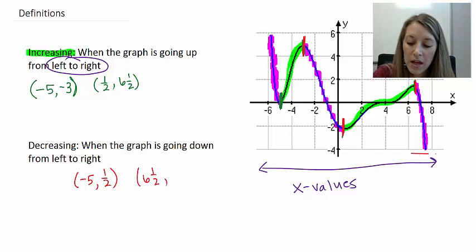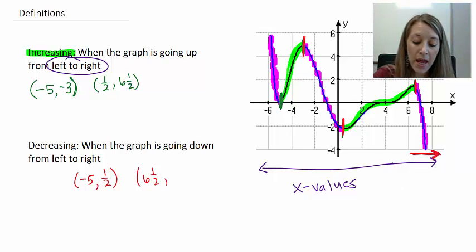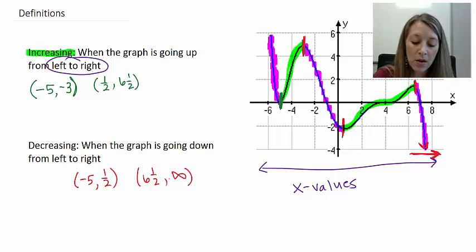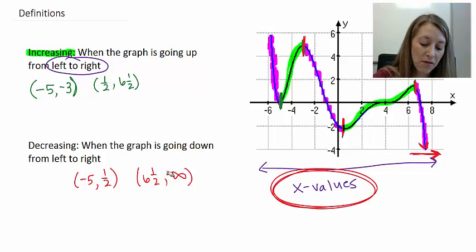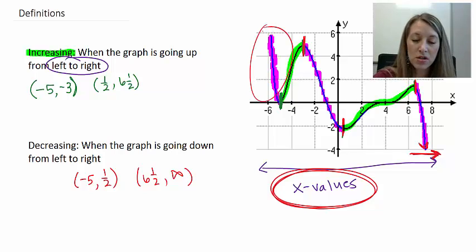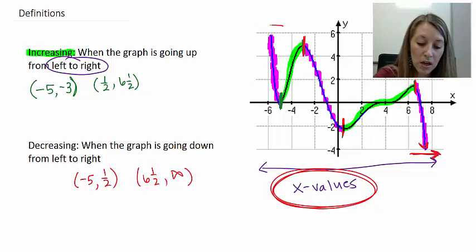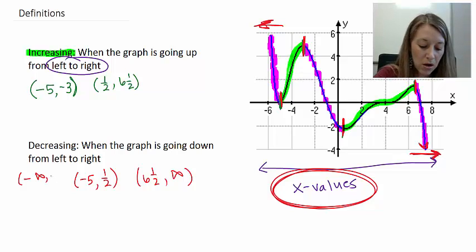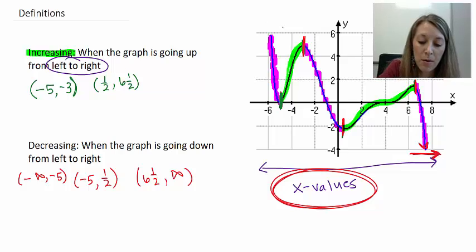The decreasing interval on the right starts around six and a half. Where does it end? It ends all the way on the right, so this is where students make simple mistakes — if it's ending on the right, it's ending at positive infinity. The graph is going down, but remember these are x-values dealing with left and right. Likewise, the left decreasing interval starts at negative infinity because it begins at the very left-hand side of the graph, ending around negative 5. Just because it's up on the graph doesn't mean it's positive — we're talking about the x-direction.